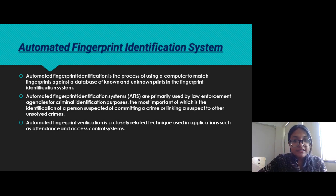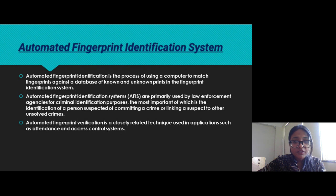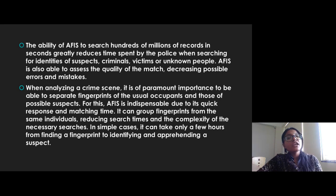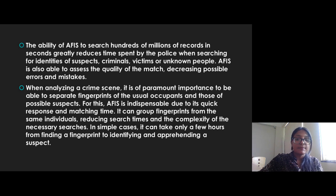Automated Fingerprint Identification Systems are primarily used by law enforcement agencies for criminal identification purposes. The most important use is the identification of a person suspected of committing a crime, or linking a suspect to other unsolved crimes. The ability of AFIS to search hundreds of millions of records in seconds greatly reduces time spent by police when searching for identities of suspects, criminals, victims, or unknown persons.